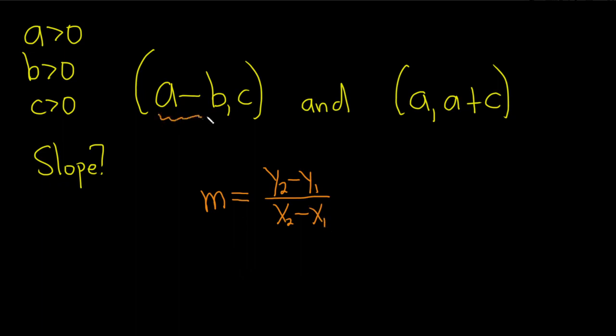Let's go ahead and label things. So this piece here, this is our x1, and this will be our y1. This will be our x2, and this piece here is our y2.